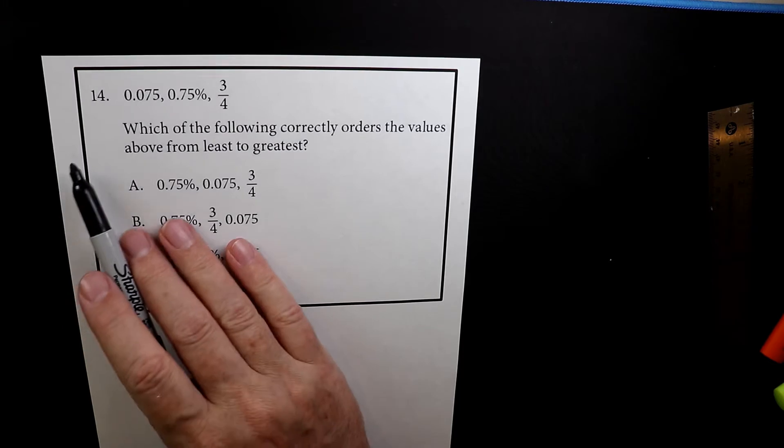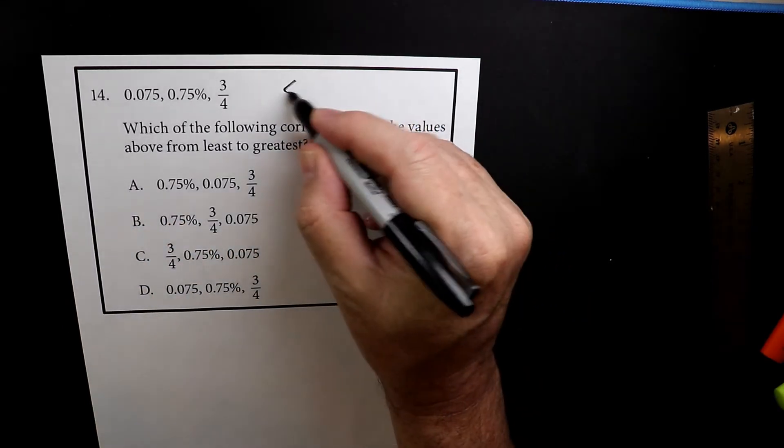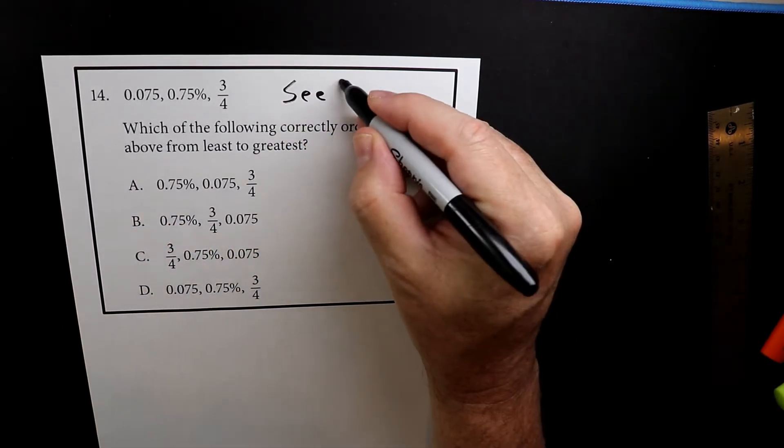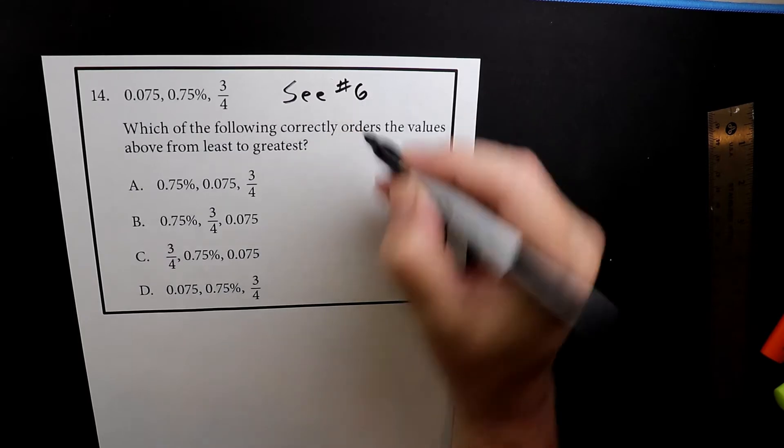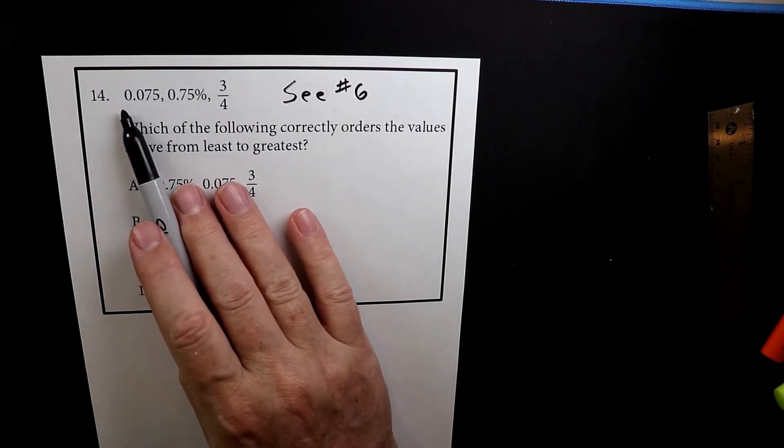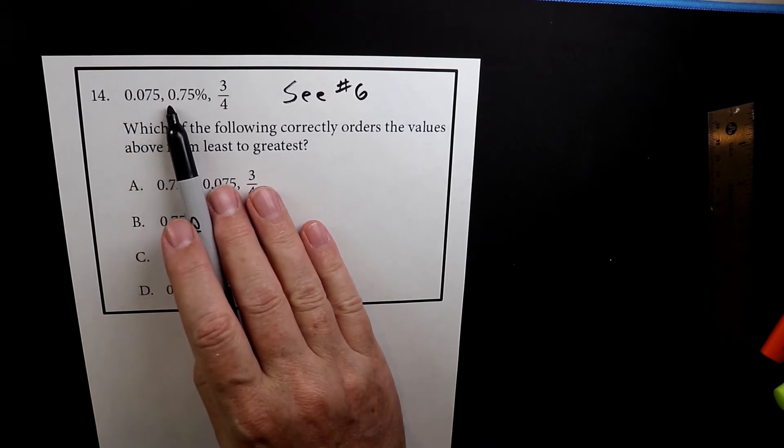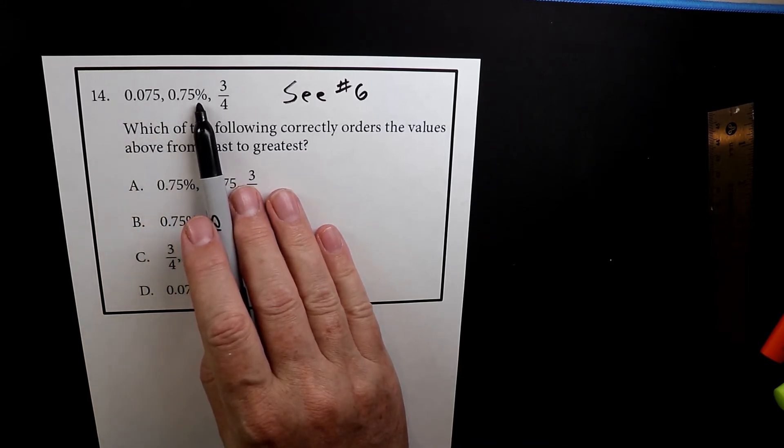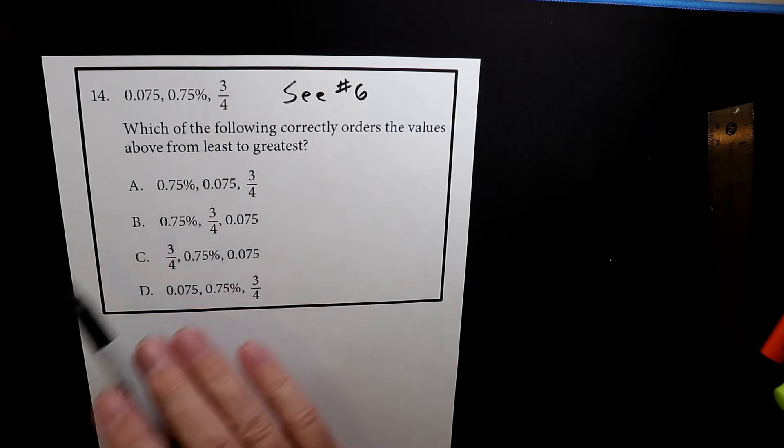So this is number 14. It's very similar to number 6. So I'm going to put here see number 6 if you want additional review. Okay, so we have three numbers: 0.075, 0.75%, and then a fraction 3 over 4.